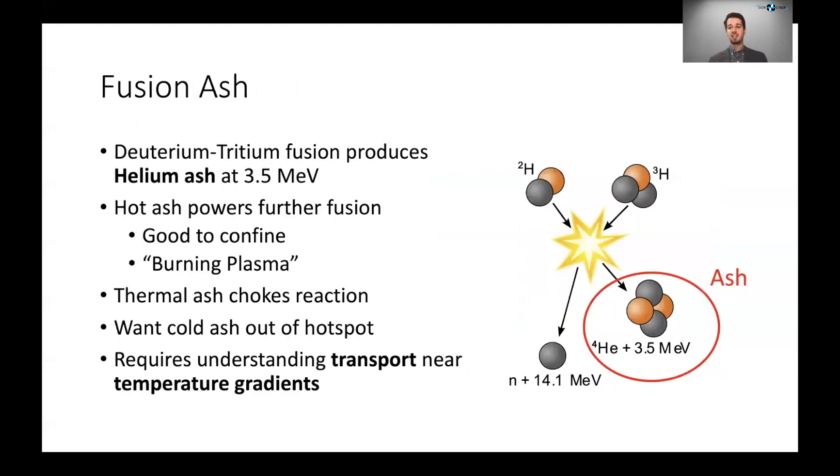Now as this fusion reaction goes forward, the deuterium-tritium reaction in particular will produce both a very high energy neutron and some high energy helium ash. And that neutron just leaves, it's not charged, so it's free to just ignore all the fields and leave. But the ash is a charged particle and so it sticks around in the plasma as long as you have that magnetic field.